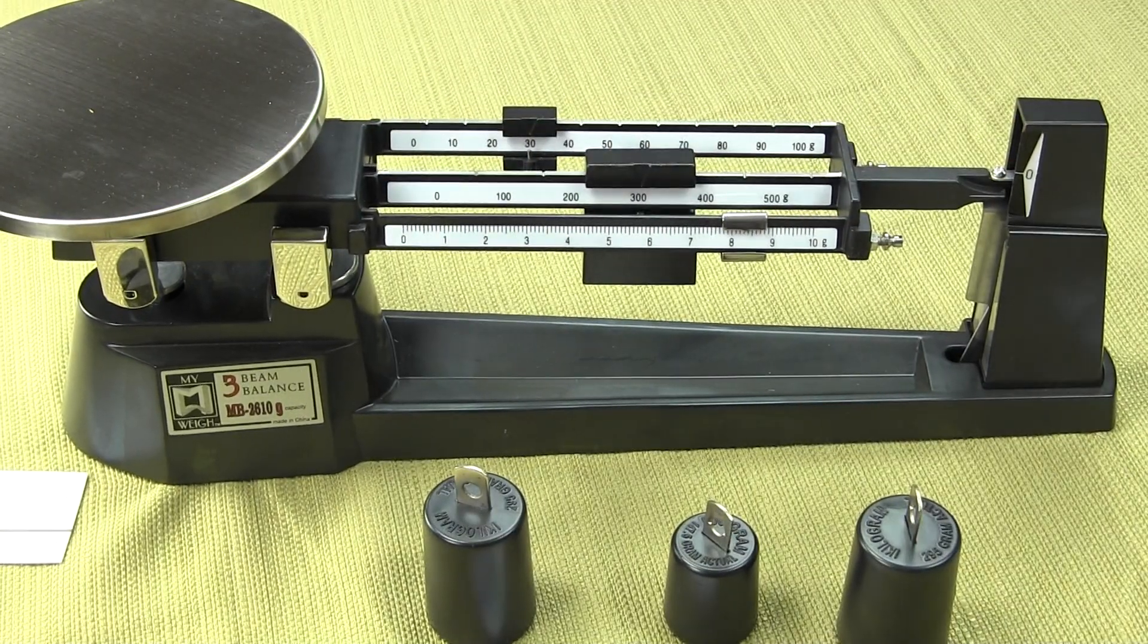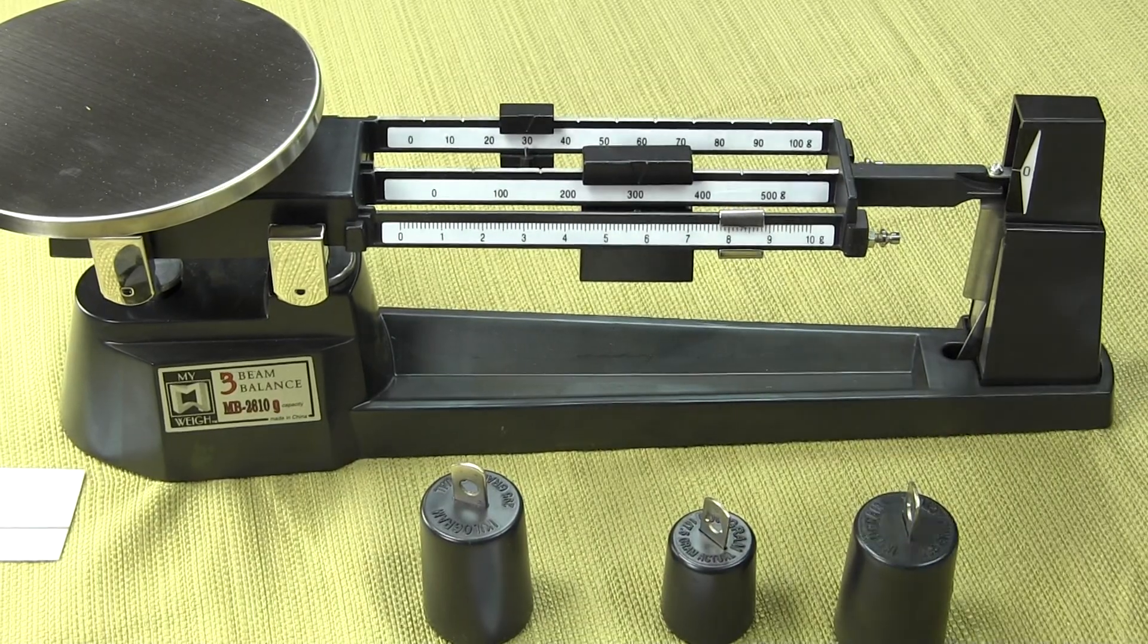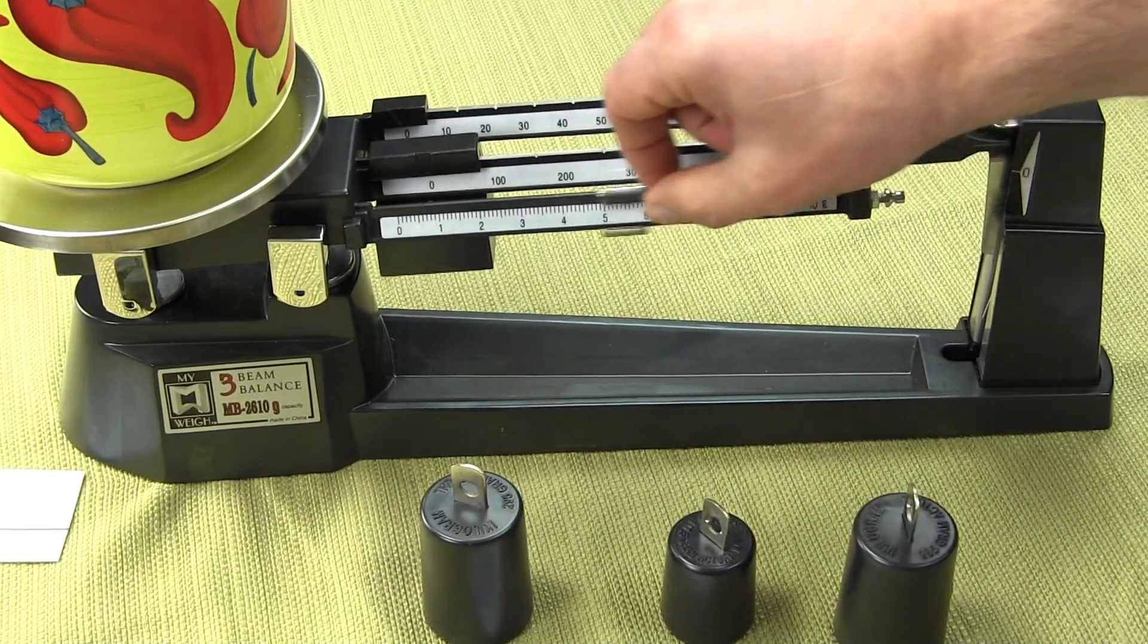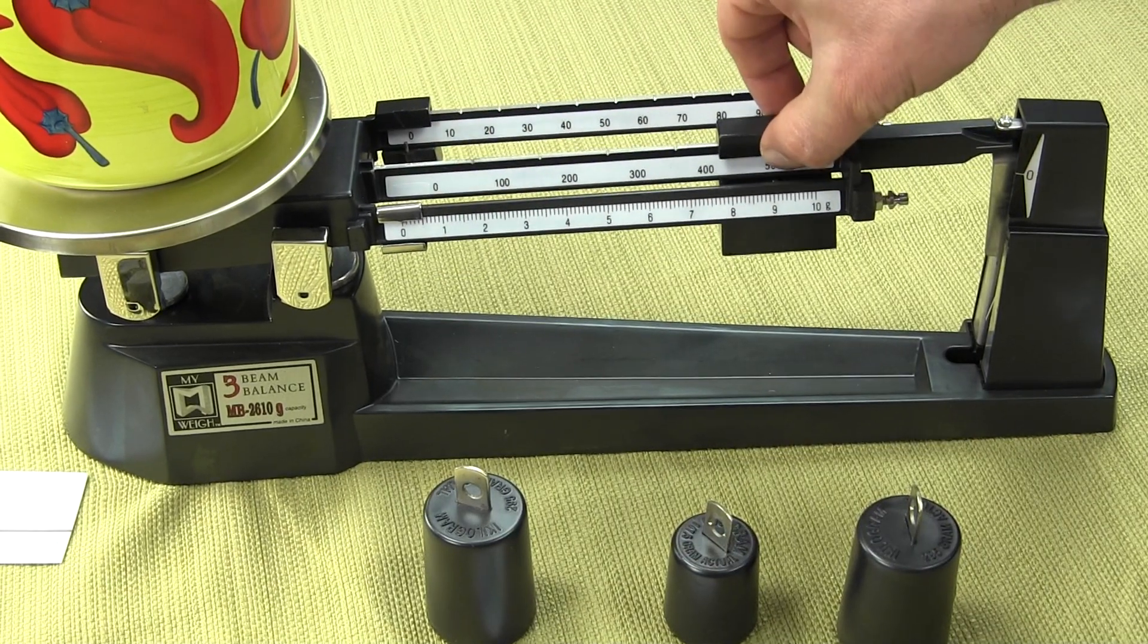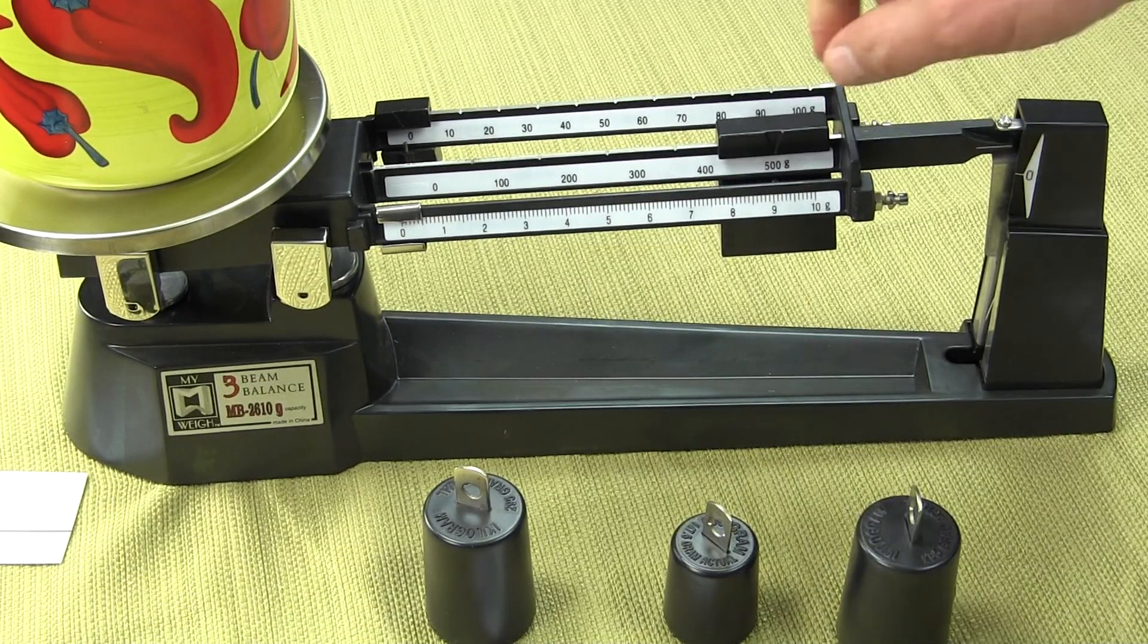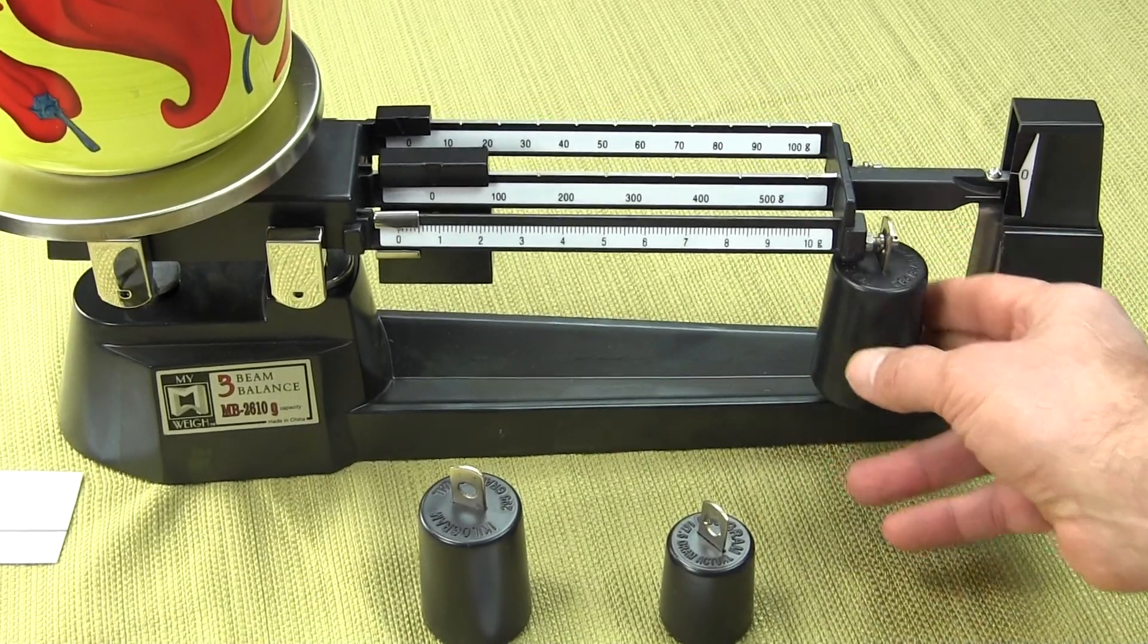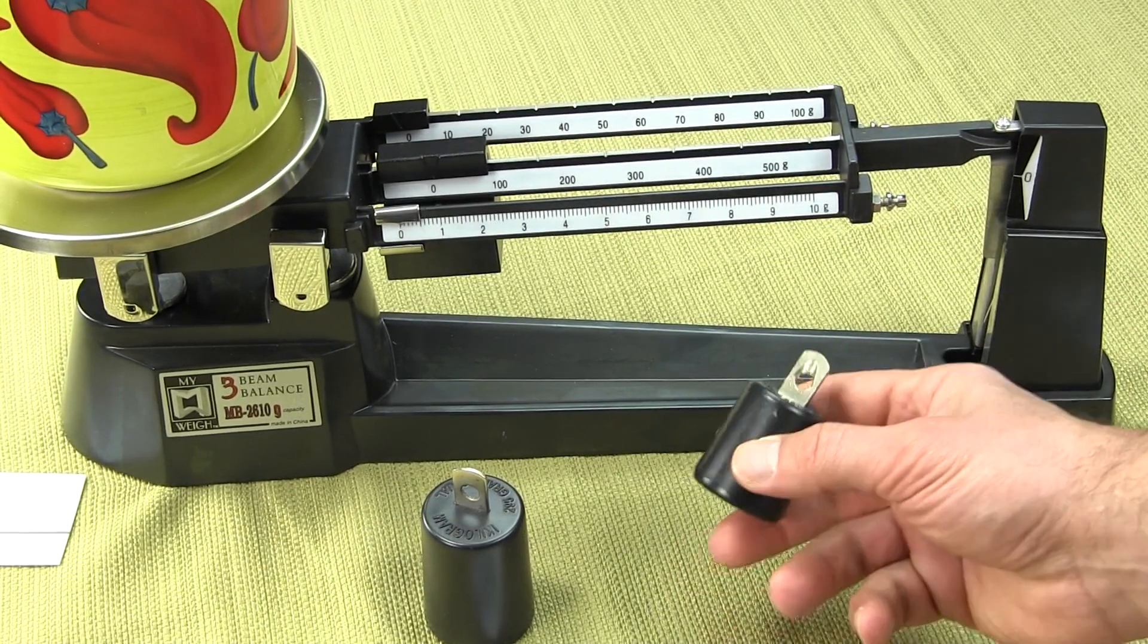We'll give you an example of how to use the attachment weights. I have a large spice container and it's the same deal. You have all your poises all the way back. You want to slide your 500-gram poise and it doesn't go down. At that point, we want to start using attachment weights. We'll put the 1,000-gram and see if the beam comes down, and it does. So 1,000 is too heavy. We'll use the 500.